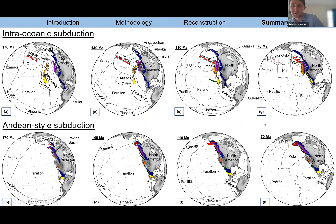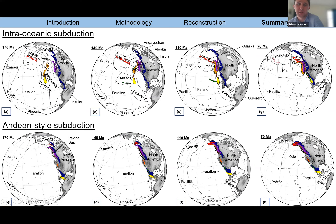Comparing to older models, there's a very significant difference. A traditional Andean-style subduction model always has the Farallon plate subducting beneath North America with relatively few plates. Whereas in the interoceanic subduction model, there are lots of different oceanic plates — maybe six or seven different little oceanic plates including the Caribbean — all interacting and colliding together. It's a complex history, but supported by paleomagnetic data from the terrains, their geological signatures, and the tomographic images that allow you to constrain exactly where they were.